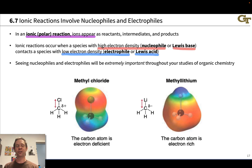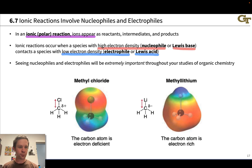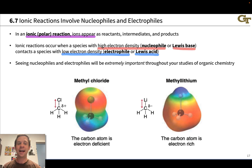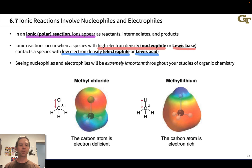Throughout these slides, you will see me highlight nucleophiles in red and electrophiles in blue. The reason is made clear by these electron density maps, where regions of high electron density are highlighted in red and regions of low electron density are highlighted in blue.